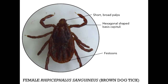And finally, we have the brown dog tick. This tick is very rarely seen in Canada and is most common to the southern United States, but is occasionally introduced generally when pets travel. This tick has short, broad palps, a hexagonal-shaped basis capituli, and festoons.